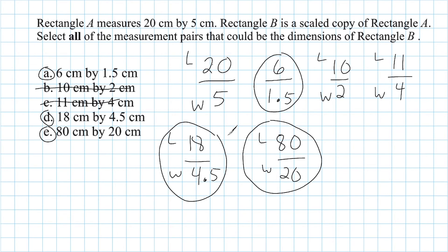And a way that we can check this is we could set each one of these equal to 20 over 5 and cross multiply just to verify that the values are proportional to each other. For example, we could take 20 over 5, which is our original rectangle, and we could set it equal to 6 over 1.5. And if I were to cross multiply, I would get 30 in this direction, and 20 times 1.5 is also 30, which verifies that these values are proportional to each other, so it is a scale copy.